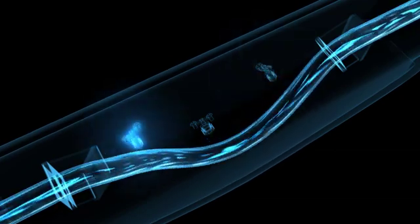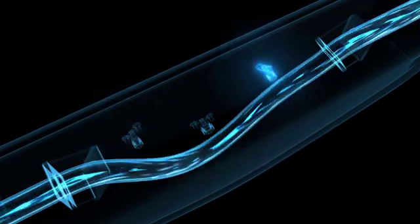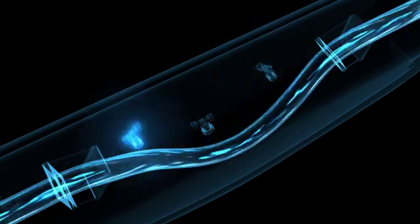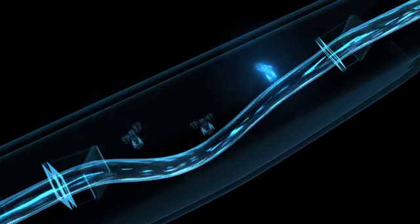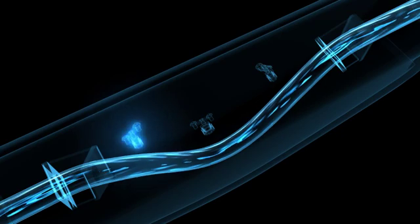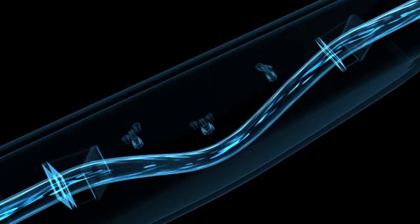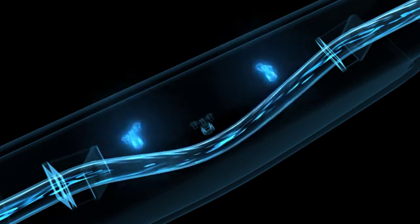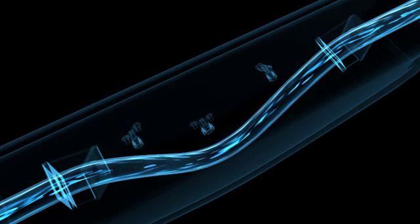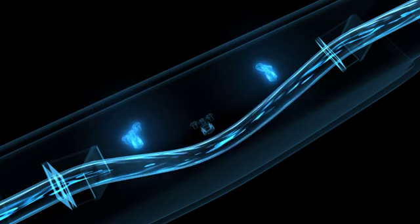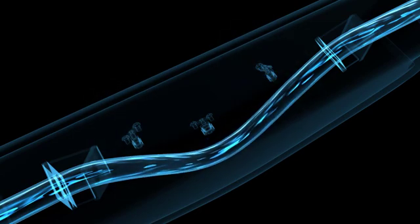The application of the Coriolis measuring principle doesn't stop here. It can also be used to simultaneously determine the density of the flowing fluid. To do so, the sensors also register the oscillating frequency. In other words, how often the measuring tube moves back and forth in one second.